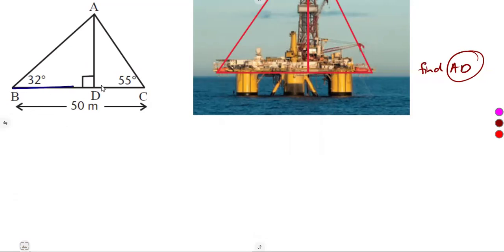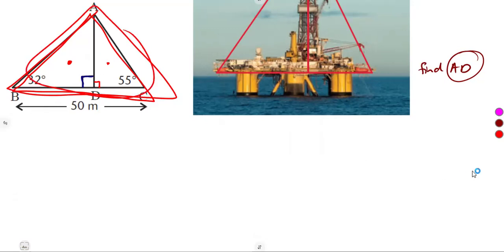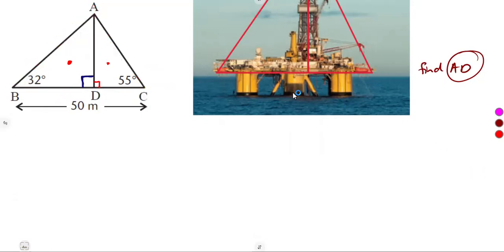This is a straight line, so angles on a straight line: if this angle is 90 degrees, therefore it follows that angle ADC is 180 minus 90 = 90 degrees. So they are both right-angled — this one and this one. And there is triangle ABC, the outer triangle, which is a non-right-angled triangle. So we've got a combination of three triangles.